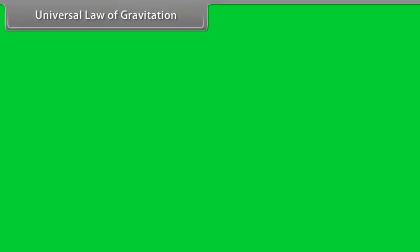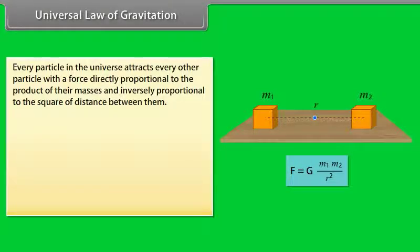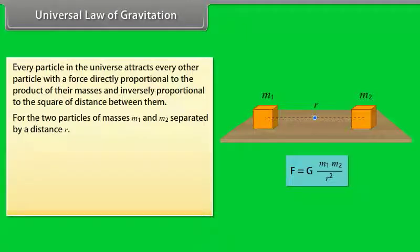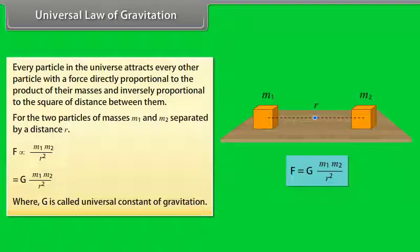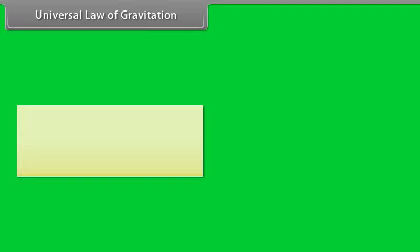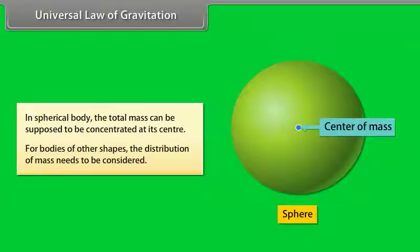Universal law of gravitation. According to Newton's law of gravitation, every particle in the universe attracts every other particle with a force directly proportional to the product of their masses and inversely proportional to the square of the distance between them. For two particles of masses m1 and m2 separated by a distance r: F = G·m1·m2 / r². The constant G is called the universal constant of gravitation. For a spherical body, the total mass can be supposed to be concentrated at its center.